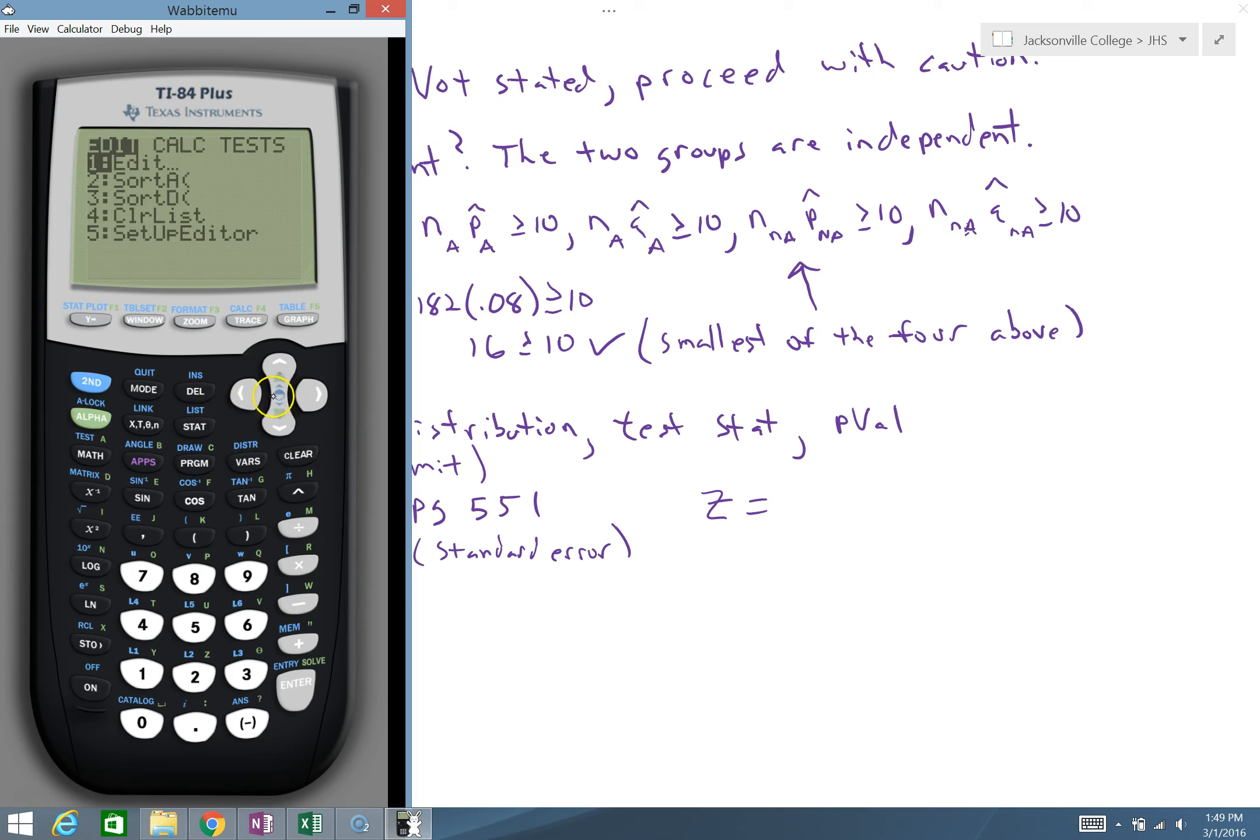Coming to our calculator, we will go to stat, then tests, then two proportion z-test. Our first group is our air pollution group. How many successes do we have? It doesn't give us a specific count. It says 8%. So I'm going to find 8% of 182 simply by doing the multiplication. If we get this non-integer, we need to make it an integer. 14.56.